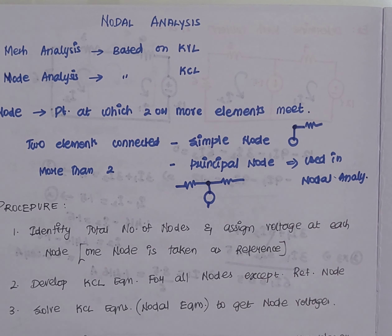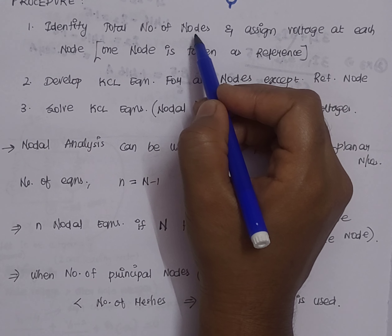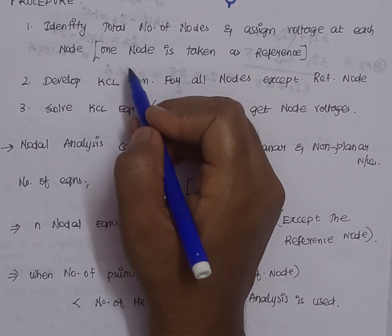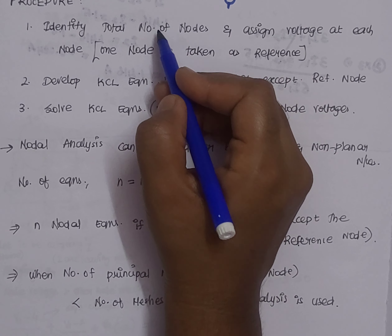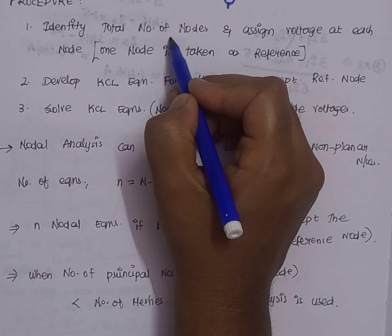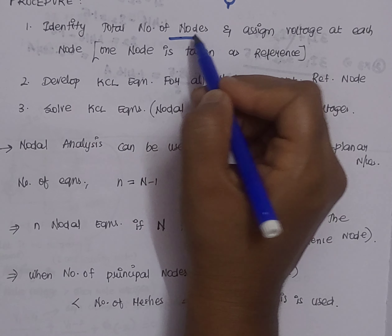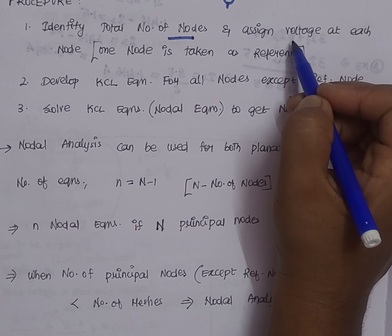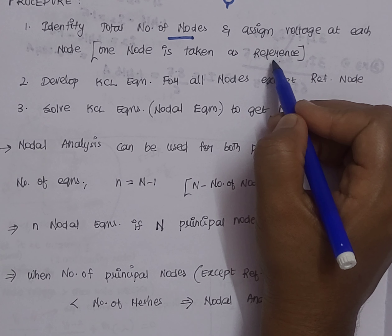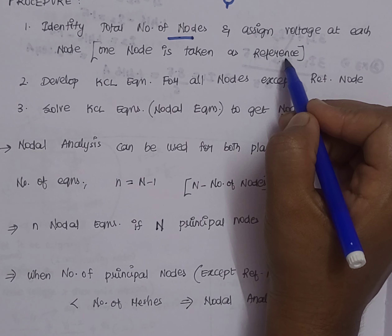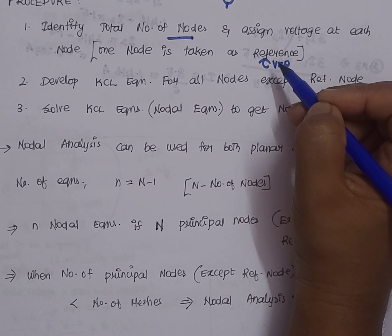The procedure is: first, we have to identify the total number of nodes and assign a voltage at each node. One node is taken as the reference node. In the given circuit, we identify all principal nodes and assign voltages V1, V2, or V3 to each. The reference node has a voltage value of zero.